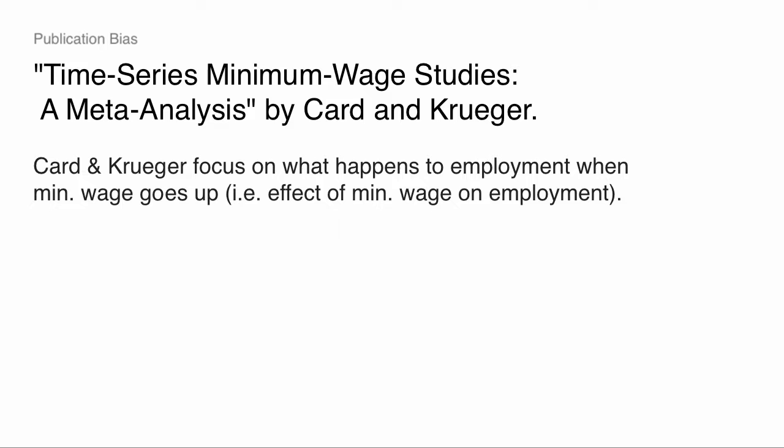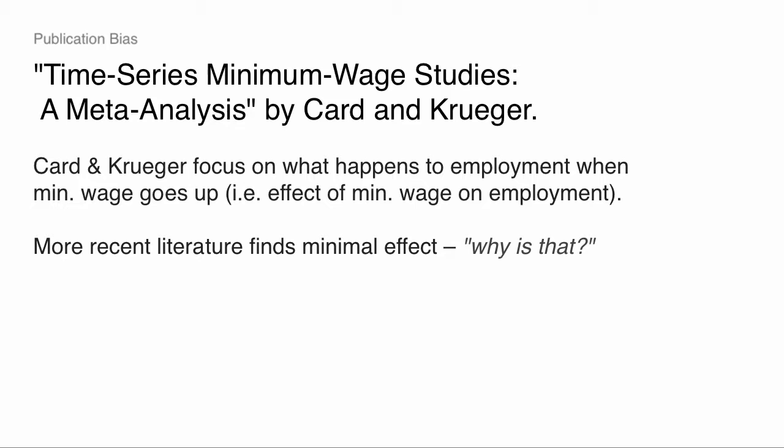They're going to be focusing on what happens to employment when the federal minimum wage goes up — a critical policy question. What they find is: their starting point is that there was this older cross-sectional literature of these 15 to 20 studies, and they tend to find these negative employment effects. But the more recent cross-sectional literature using better research designs actually tends to find pretty minimal effects — either smaller negative effects or zero effects.